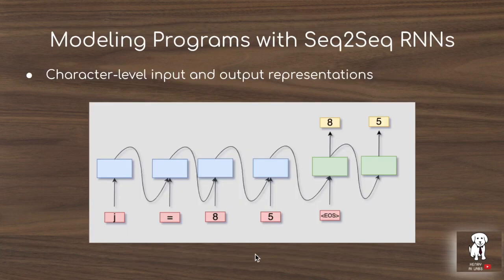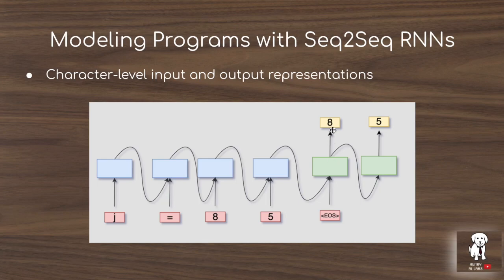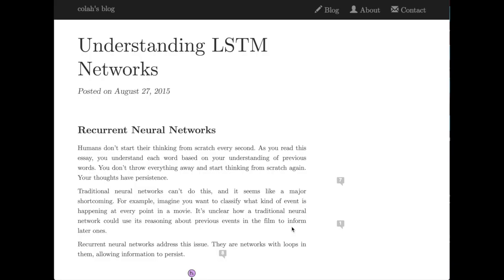This slide gives a high-level overview of modeling programs character-by-character with sequence-to-sequence RNNs. The sequence-to-sequence framework uses an encoder and a decoder. The recurrent neural network has an input hidden cell state that carries forward, encoding the input sequence — in this case the Python program — and then the decoder takes over to produce the output. In 'Learning to Execute', the authors use a long-short-term memory architecture in this sequence-to-sequence encoder-decoder framework.